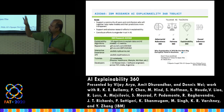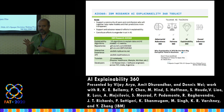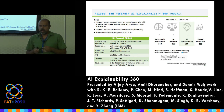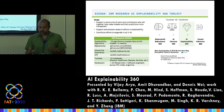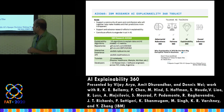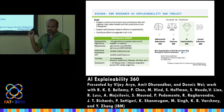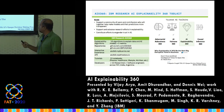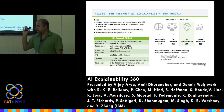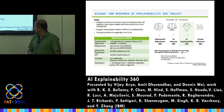Let me talk about AIX360 a little bit. The initial version, released around 5 months back in August, had 8 explanatory algorithms, all from IBM. The current version 2 release has 10 algorithms and includes two explainability metrics, along with a bunch of notebooks, demos, and guidance. This toolkit is part of a broader set — the year before there were two other toolkits released, one for fairness and one for adversarial robustness, and there is a plan to release something also for privacy.